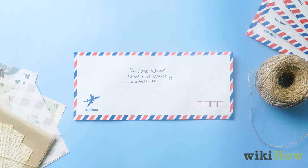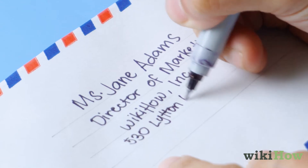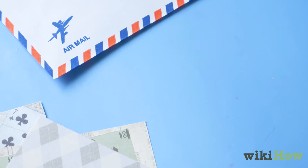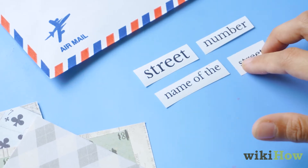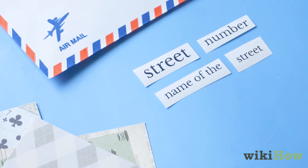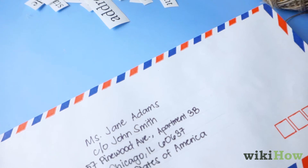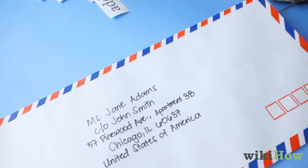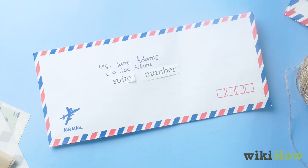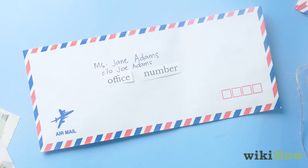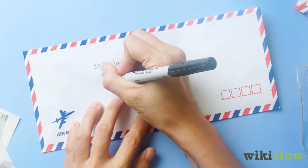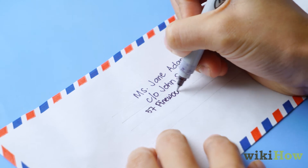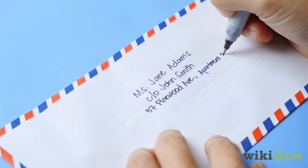On the next line, enter the street address. This usually includes the street number and the name of the street. If the address is located in an apartment building or an office building, you can also include the apartment, suite, or office number on this line. For instance, write something like 57 Pinewood Avenue, apartment 3B.